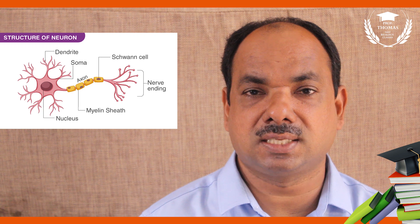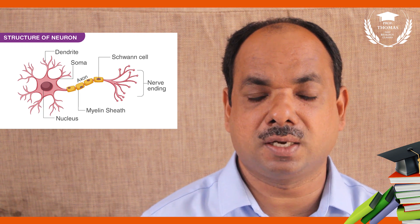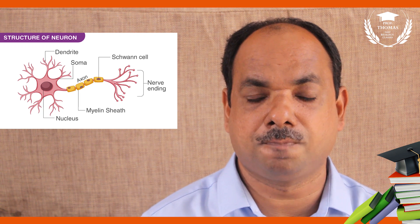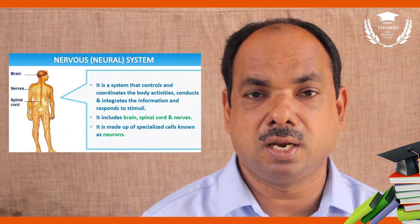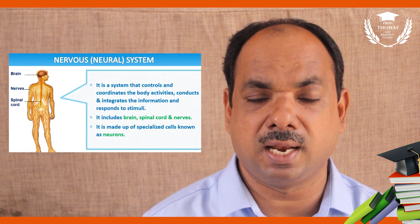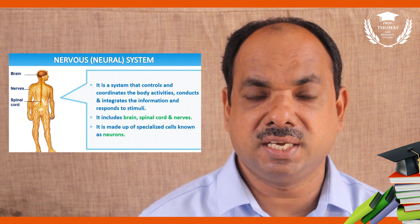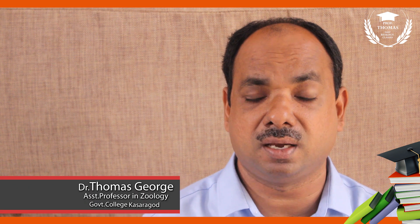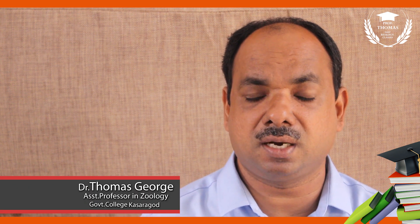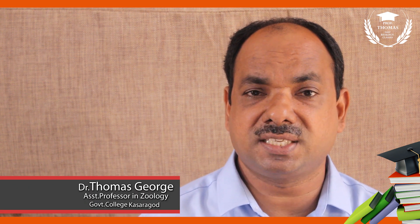Neurons are the structural and functional unit of the nervous system. It is the longest cell. Regeneration capacity is absent because the division center is absent. It is a differentiated cell of ectodermal origin.